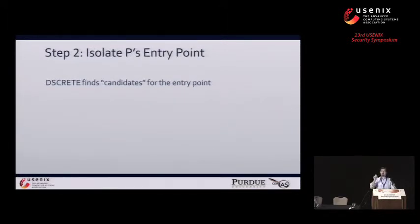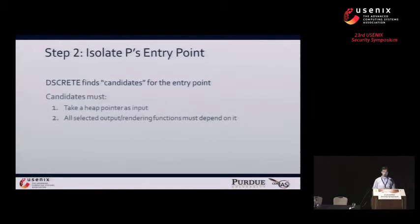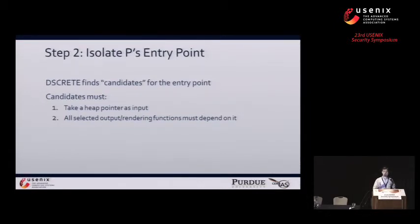In step two, Discrete has to find the entry point to that P logic, because the printing rendering component is going to be a tremendous portion of the application and we just want to reuse a little bit. Discrete automatically identifies instructions in that larger printing rendering component to test as candidates for this entry point, based on two criteria: first, it should be an instruction that takes as input a pointer to some data in the heap; and second, all of the selected output functions must be dependent on this entry point candidate in the program slice. The goal is that by changing the data structure pointer used by that candidate, we can accurately change the output created by the P function.